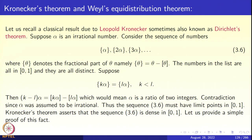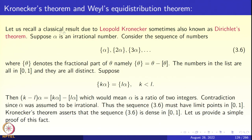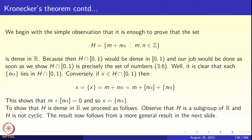This is very classical and the proof appears in elementary books on number theory or analysis. The simple observation is that instead of proving the numbers 3.6 are dense in [0,1], it suffices to prove that H = {m + n alpha : m, n integers} is dense in R. If H is dense in R, then H intersect [0,1] is dense in [0,1], and one can check that H intersect [0,1] is precisely the numbers listed in 3.6.